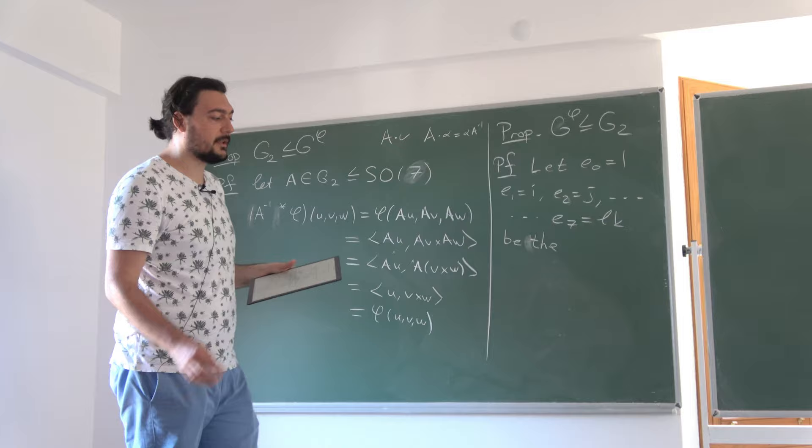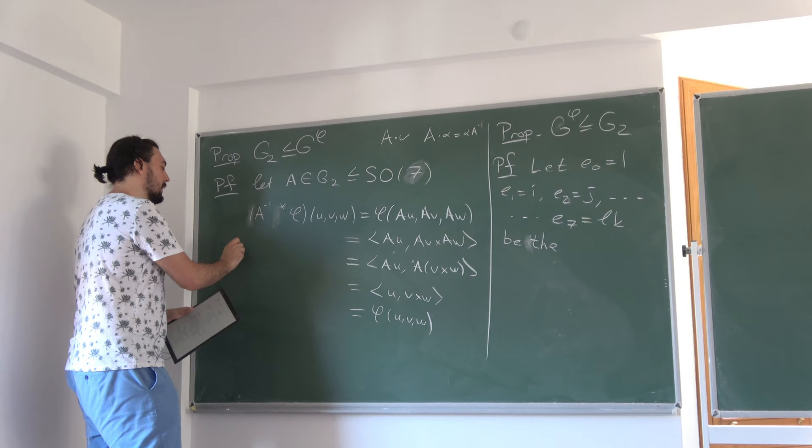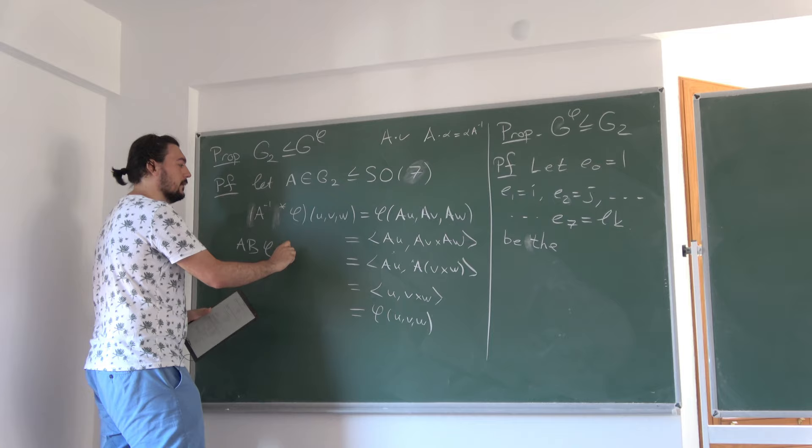Just as we defined φ, the associative calibration, we can define capital Φ — a four-form on the octonions. It's defined by Φ(z, u, v, w) = ⟨z, u cross v cross w⟩. This is called the Cayley calibration form. We'll talk about why we call it the Cayley calibration in a couple of days. From here you can define the group Spin(7, ℝ) to be the stabilizer group of this Cayley calibration Φ in GL(8, ℝ).